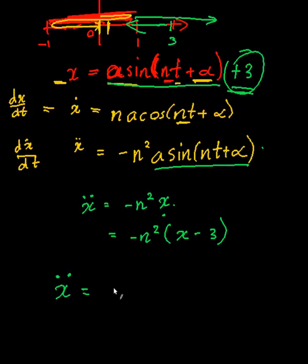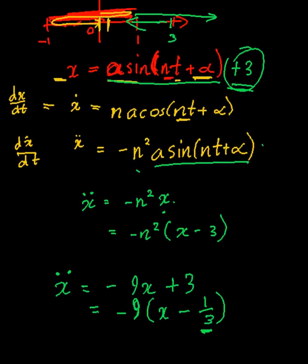So you need to keep that in mind. So anytime you see something like this where you go x double dot is equal to minus 9x plus 3, what you need to keep in mind is that it's oscillating about a point. And if you want to figure out which point exactly it is, you need to take the nine out and go, this is going to be x minus a. So it's going to be oscillating about a third. And the amplitude, so not the amplitude, I think I'm mixing the same concepts.